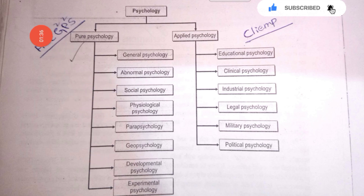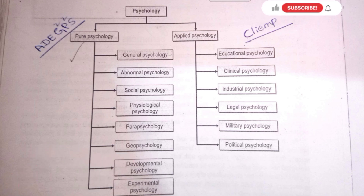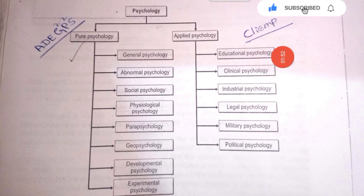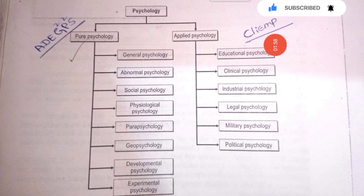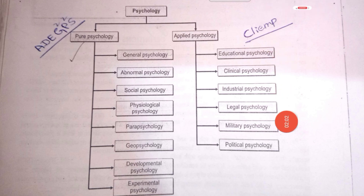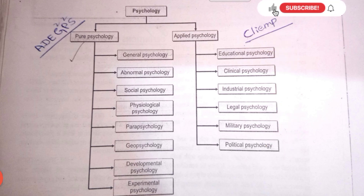This covers the GPS mnemonic. Next, we will talk about another mnemonic: A is Clinical Psychology, L is Legal Psychology, I is Industrial Psychology, E is Educational Psychology, M is Military Psychology, and P is Political Psychology.